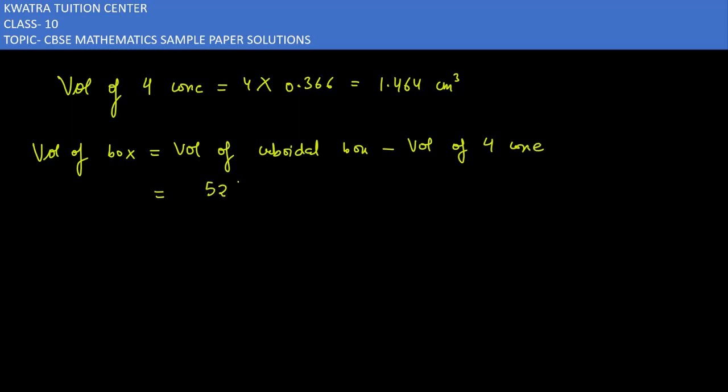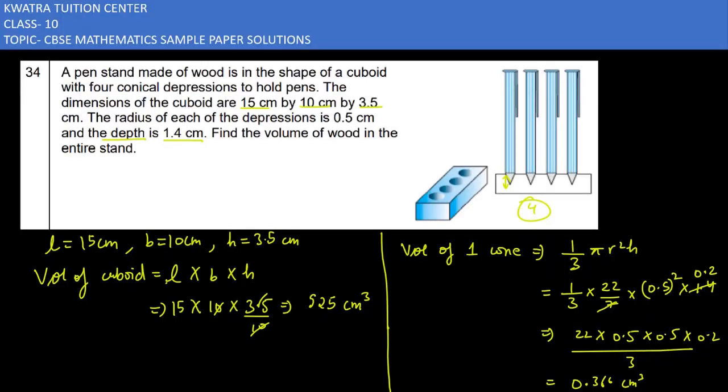So how much is the cuboidal box? It is 525 minus 1.464. So yes, you will get the answer as 523.536, approximately 523.5 cm³. So yes, this is the answer to this question.